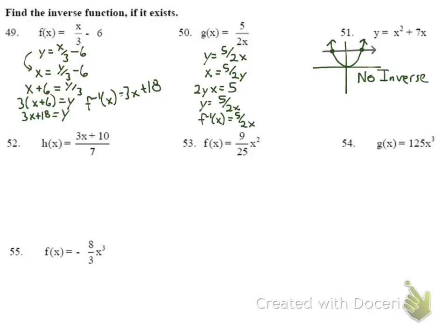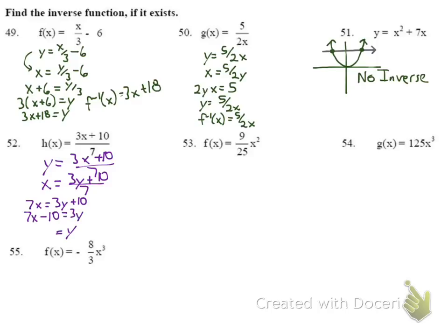Number 52: write y = (3x + 10)/7, switch x and y, multiply both sides by 7 to get 7x = 3y + 10, subtract 10, then divide by 3. The inverse of h(x) is (7x − 10)/3.